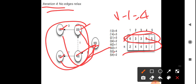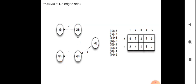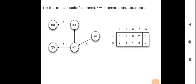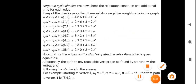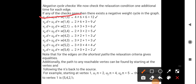To check for a negative weight cycle, we perform a 5th iteration. If any distance value changes during this iteration, it would indicate the existence of a negative weight cycle. However, in this example no distances change, so the algorithm confirms that there is no negative weight cycle in the graph.